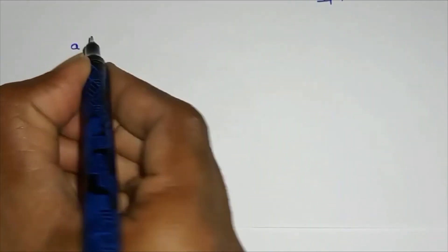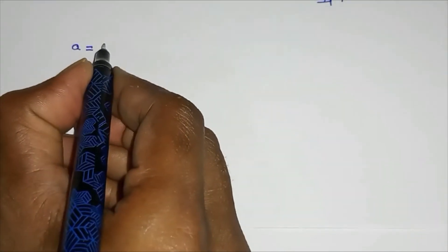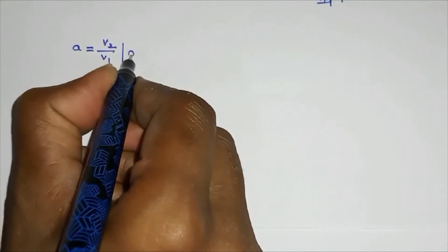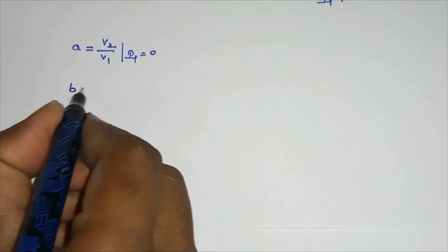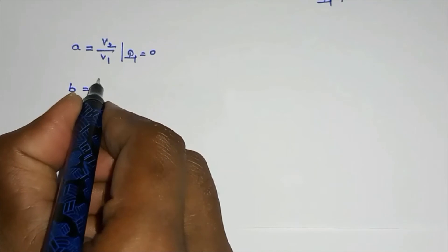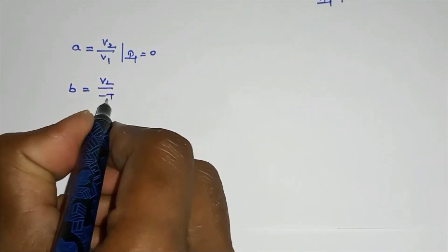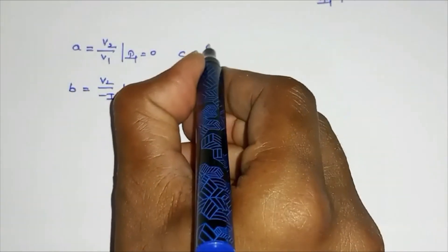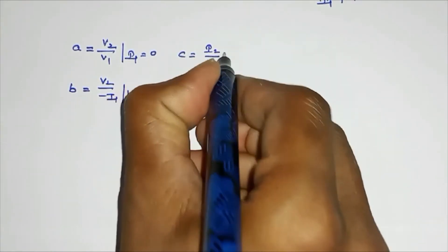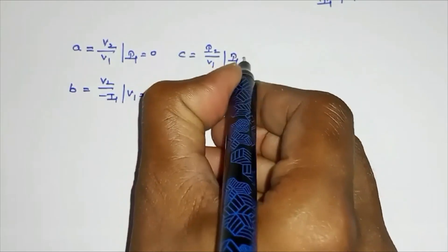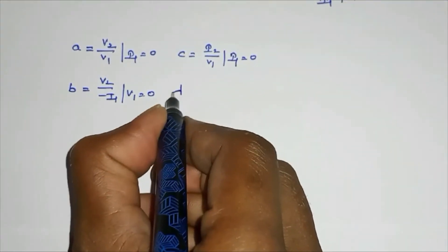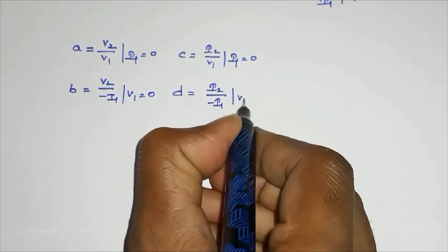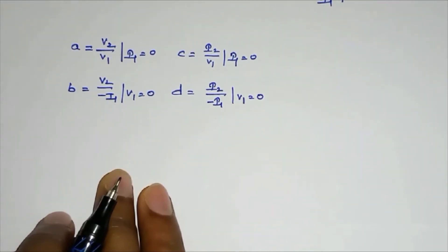So we have: b equal to v2 by minus i1 at v1 equal to 0; c equal to i2 by v1 at i1 equal to 0; d equal to i2 by minus i1 at v1 equal to 0. Here we have 4 parameters in total.